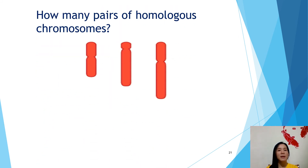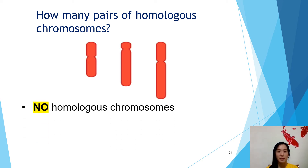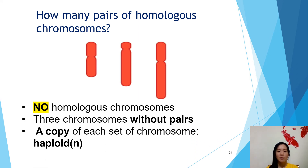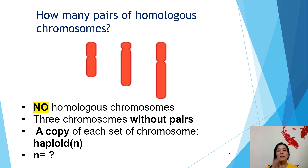How many pairs of homologous chromosomes does this picture show? There are no homologous chromosomes here — there are only three chromosomes without a pair. A copy of each set of chromosomes is haploid. According to this diagram, n equals 3. That means in this nucleus there are only three chromosomes, so it is haploid.